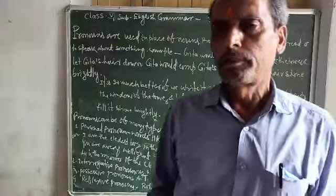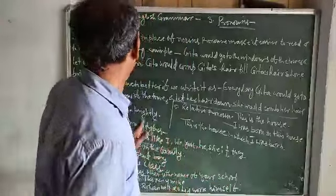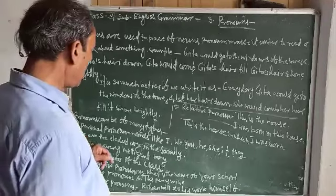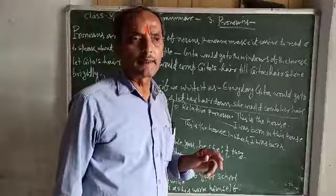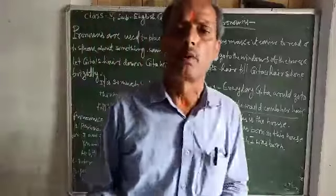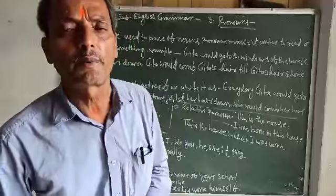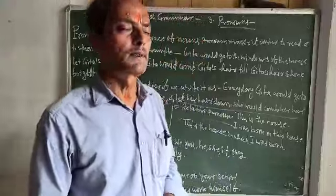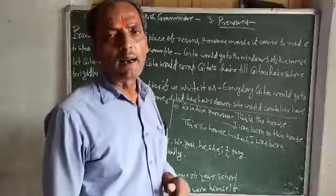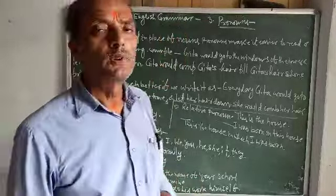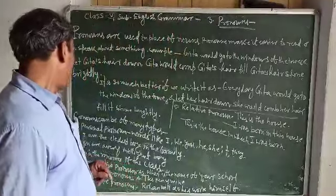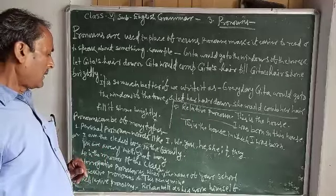The pronouns can be of many types. Pronouns are words like I, we, you, he, she, it, they. For example: 'I am the eldest boy in the family.' Here the personal pronoun is 'I'.